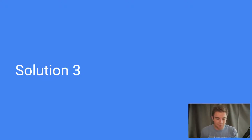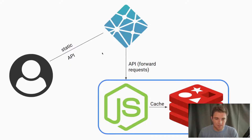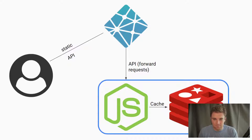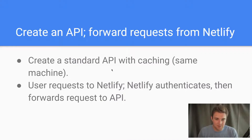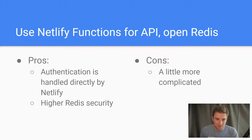The third solution, and probably the one I'll go with, is still having a standard API but you authenticate the request via a Netlify function. You just forward the request along if the user is authenticated — think of it like a third-party API you'd use anyway, except you make one yourself and can handle caching there. This is the most straightforward solution if you don't have a business plan. You create a standard API with caching on the same machine, so it's more secure, and the user makes a request to Netlify, which authenticates and forwards it to the API. Pro: authentication handled directly by Netlify and higher Redis security. Con: a little more complicated.